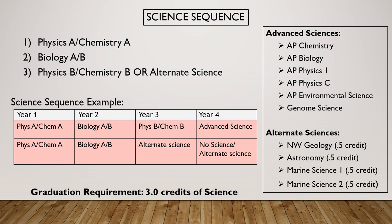For older students looking at advanced science options, we have AP Chem, AP Bio, AP Physics (a couple of different types), and AP Environmental Science — tons of AP options. Genome Science, while not an AP, is one of the most popular classes we have here, taught by an excellent teacher. There are also alternate sciences you can mix and match — for example, 0.5 credits of Northwest Geology, 0.5 of Astronomy. Students only need three credits of science to graduate, but we always recommend four years of science if you're thinking about a four-year university.